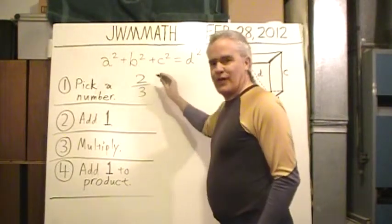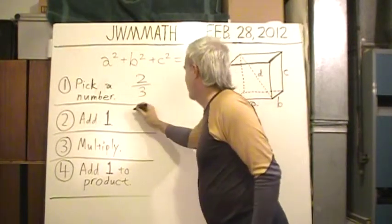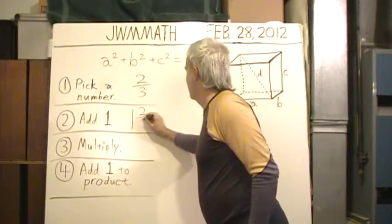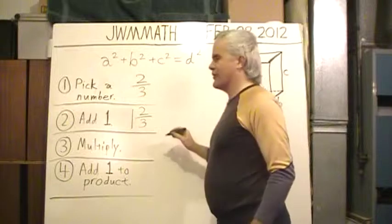And I'm going to add one to that fraction, one plus two-thirds. I'm just going to call it one and two-thirds. That's a mixed number.